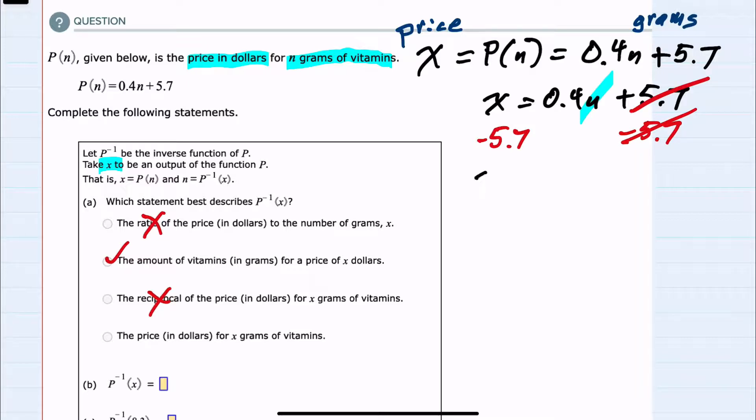Canceling on the right, I now have x minus 5.7 equals 0.4n. To finish solving for n, I'll divide both sides by 0.4. Canceling on the right, I now have n by itself.